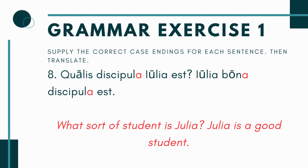Number 8: 'Qualis discipula___ Julia est? Julia bona___ discipula___ est.' Qualis means 'what sort of,' so you're asking: what sort of student is Julia? Est is singular, and Julia is singular, so everything matches. The answer — Julia is a good student — is also all singular. It wouldn't make sense to say 'Julia is good students,' mixing singulars and plurals. All the blanks here take an -a ending.